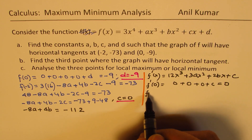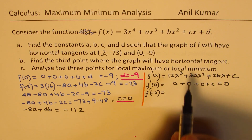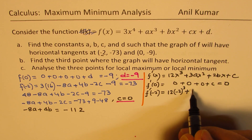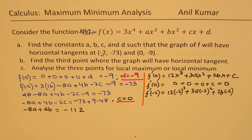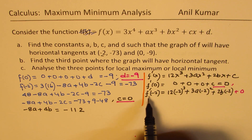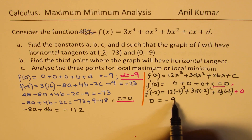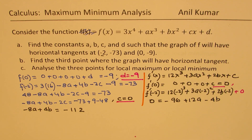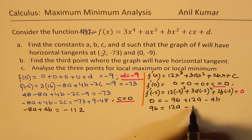We also know that the derivative at x = -2 is 0, since there's a horizontal tangent there. Substituting x = -2 into f'(x): 12(-2)³ + 3a(-2)² + 2b(-2) + 0 = 0. That gives -96 + 12a - 4b = 0, so equation 2 is: 12a - 4b = 96.